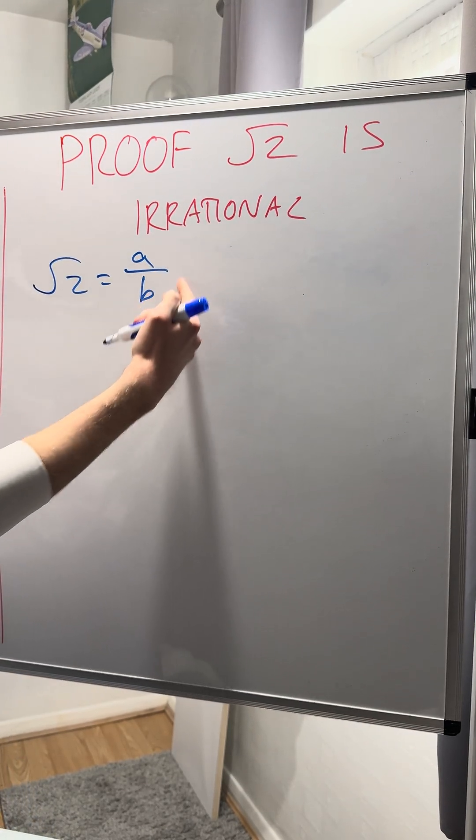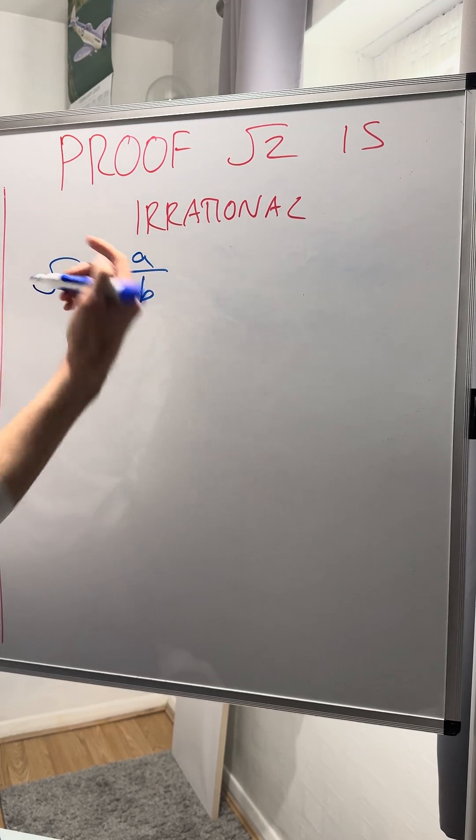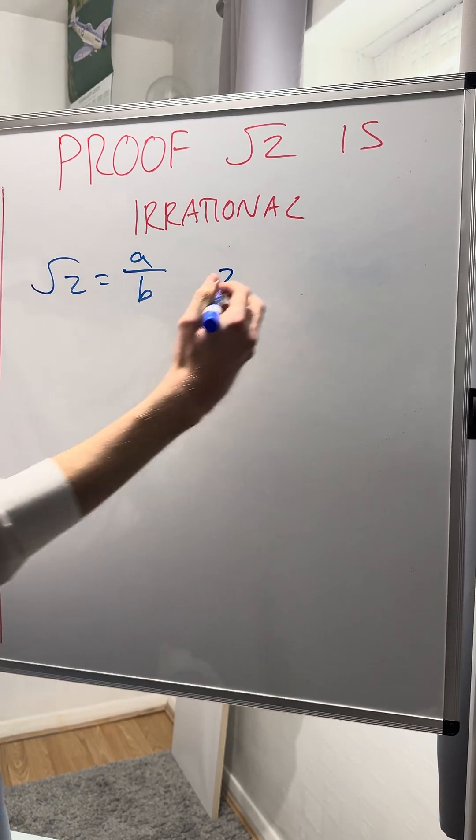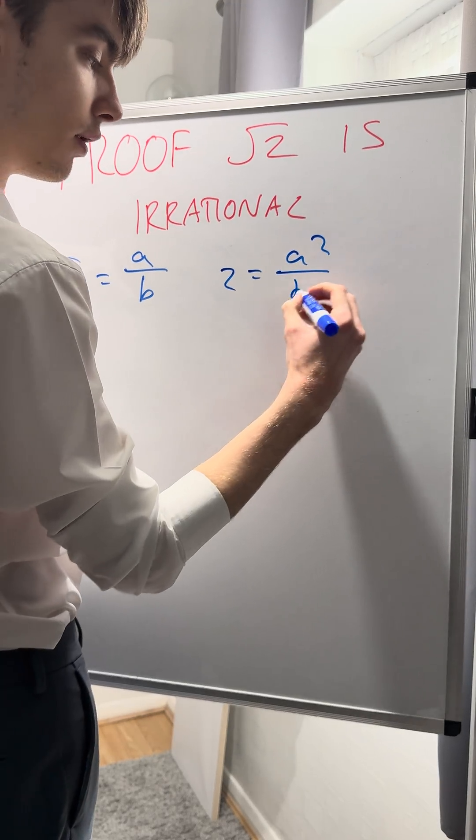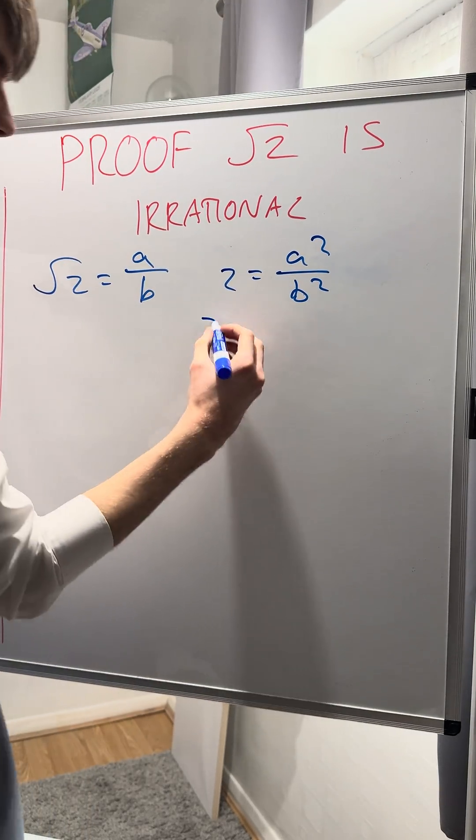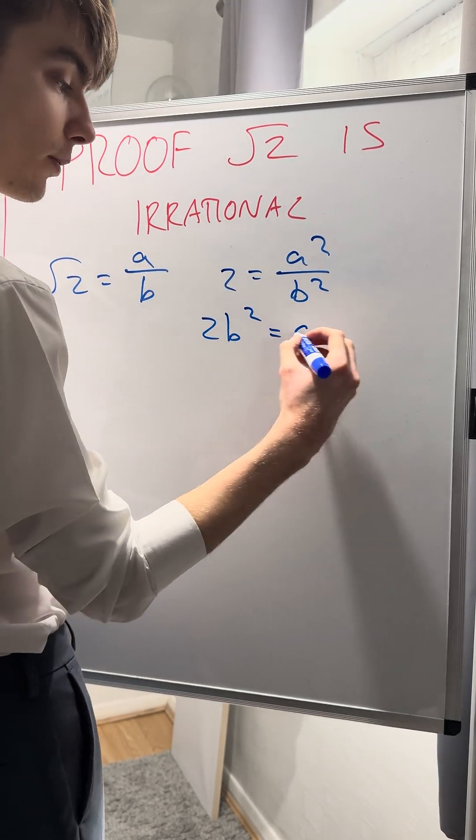I'm also going to assume I can't simplify this fraction—you'll see why later. Let's square both sides. I get 2 on the left and a squared over b squared on the right. Then I rearrange this into 2b squared equals a squared.